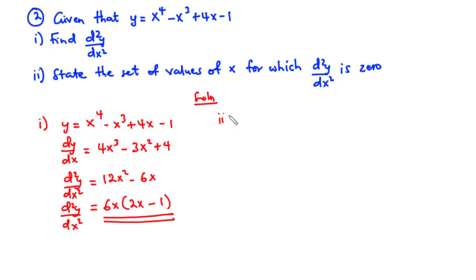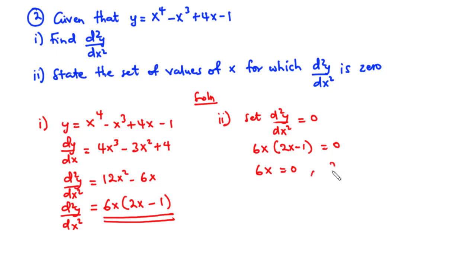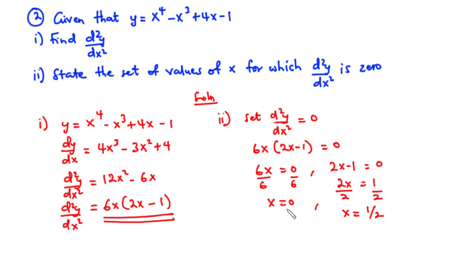Now let's solve part (ii): state the set of values of x for which d²y/dx² equals 0. We set 6x(2x minus 1) equal to 0. From the first factor, x equals 0. For the second factor, 2x equals 1, so x equals 1/2. Therefore the set of values of x is such that x equals 0 or x equals 1/2.